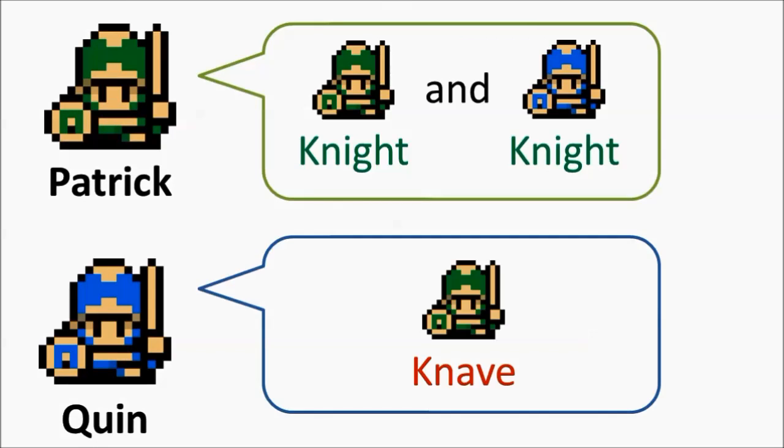We'll start simple. Let's say we know two Islanders, Patrick and Quinn. Patrick says we are both Knights. While Quinn says, Patrick is a Knave.